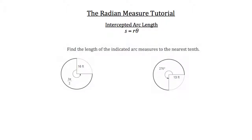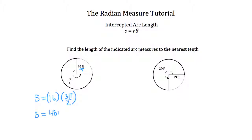Find the length of the indicated arc measures to the nearest tenth. For the circle on the left, we're calculating arc length s, which equals the radius times theta. The radius is 16 feet and theta is 3π over 2 radians. When dealing with arc length, always keep theta in radians. Multiplying 16 by 3π over 2 gives 48π over 2. Dividing by 2, s equals 24π feet — that's the length of the bold arc along the outside edge of the circle.